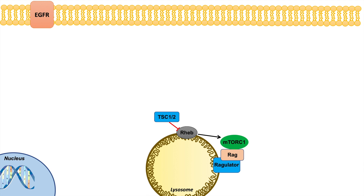mTOR complex 1 is regulated at the lysosomal interface and is associated with several proteins, including RAG and Regulator. mTOR complex 1 itself is activated by a protein known as RHEB. RHEB protein is regulated through inhibition by tuberous sclerosis complex 1 and 2, or TSC1 and TSC2. This is the foundation of regulation of the mTOR complex 1 pathway.